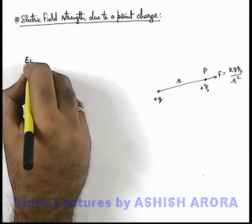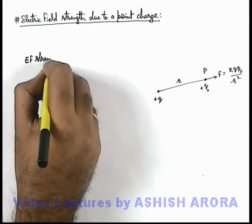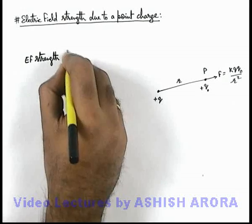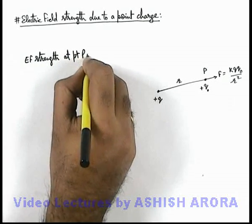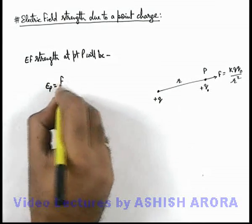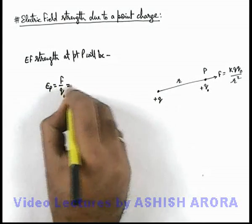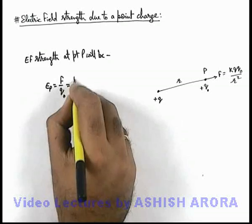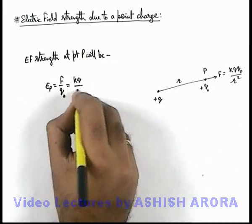We can directly write the electric field strength at point P as Eₚ = F/q₀, which can be written by substituting the value of F as kq/r².